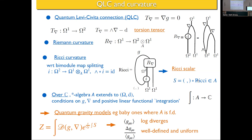The Ricci scalar is just to evaluate that further with the round-bracket metric. Over complex numbers — which is what we're interested in — A should be a star-algebra; the star should extend to Ω, and there are conditions on g and ∇ which ensure that everything in the classical case would be real. We also want some kind of integration — a positive linear functional with certain properties.